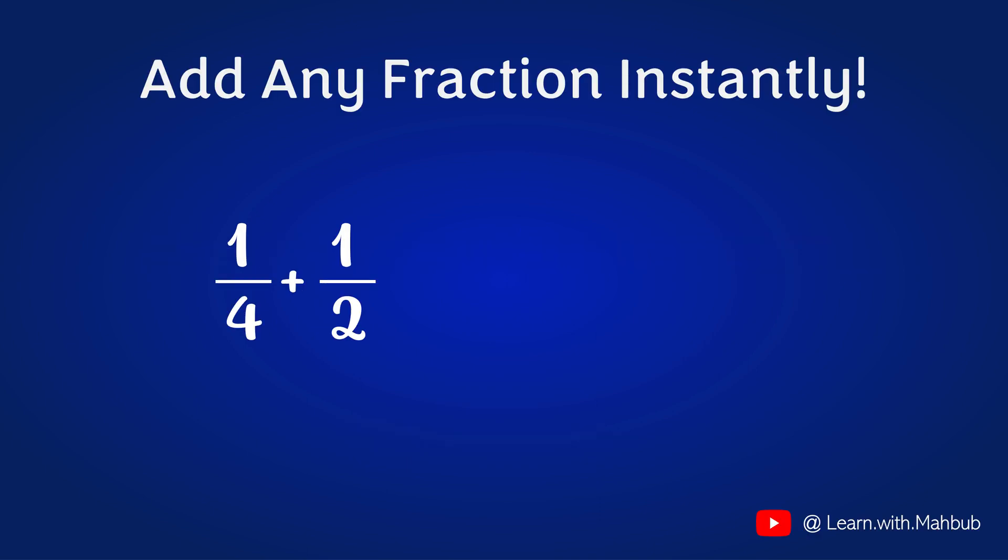Let's start with adding one quarter and a half. To add these fractions, what we should do is multiply the denominators to set up the denominator of the result. For this math, the denominators are 4 and 2. So 4 times 2 is 8. And for the numerator, we will cross multiply and add them if we are adding two fractions.